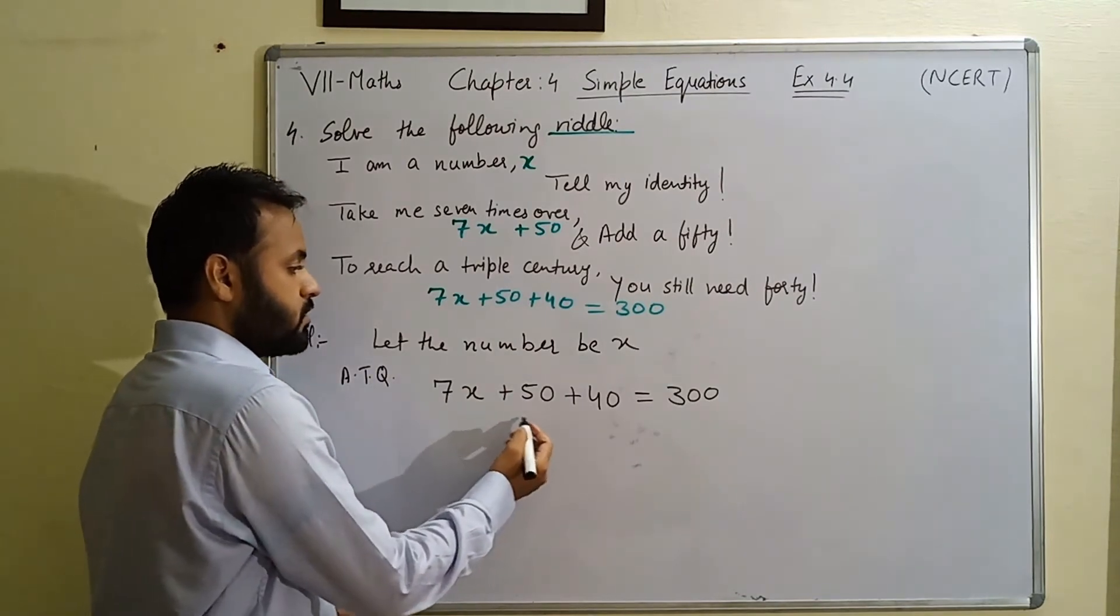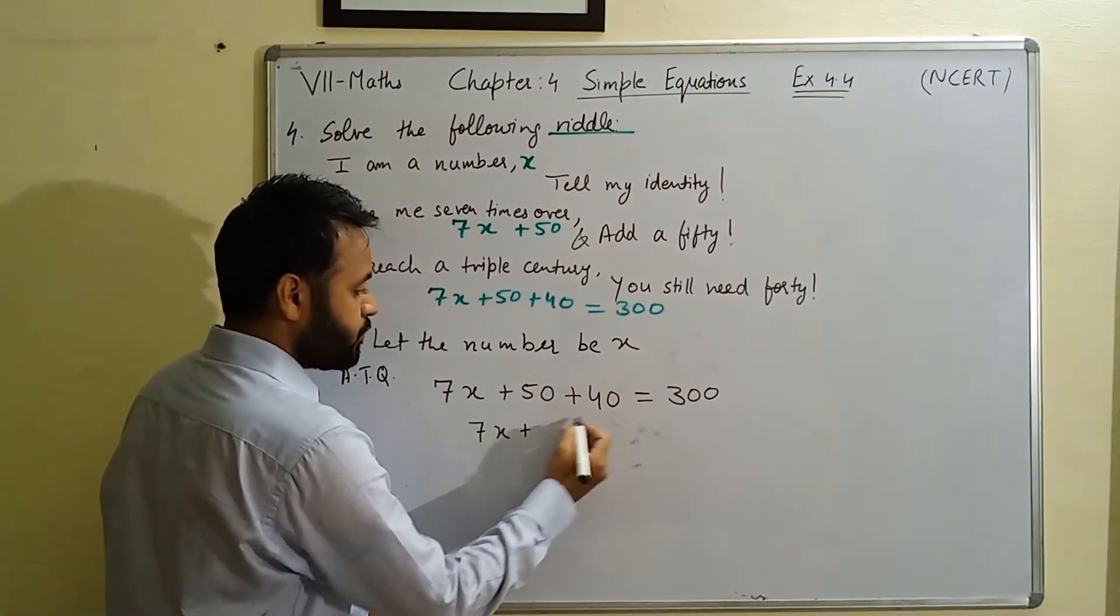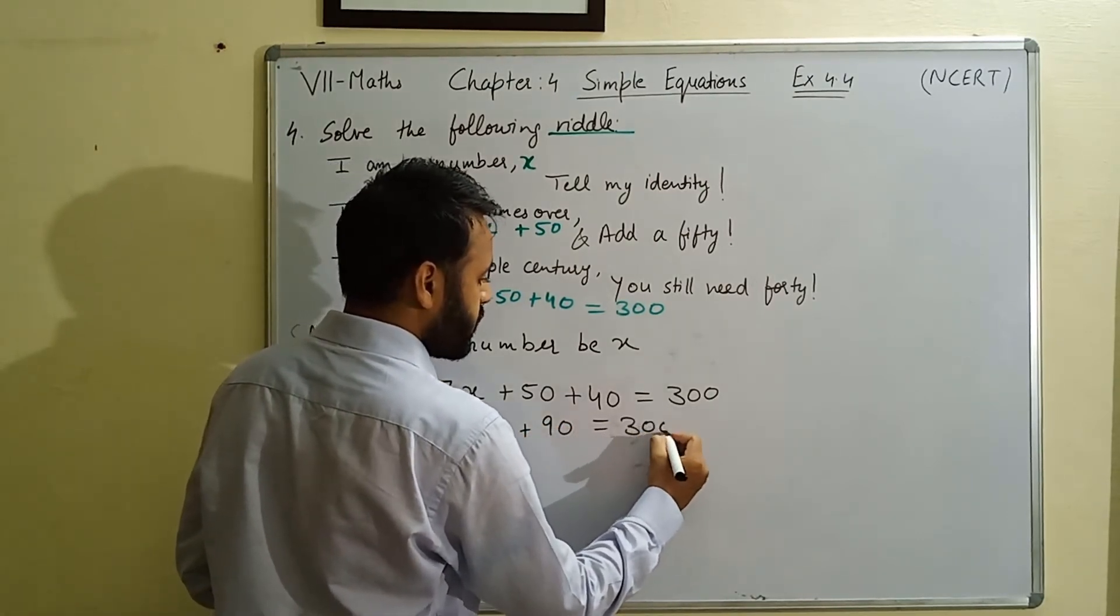Now we can add this 50 and 40 because dono constant hai. So left hand side pe 40 plus 50 kya ho jaega - hamare paas 90. And on right hand side we have 300.